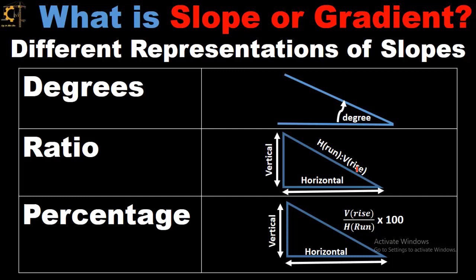What is slope or gradient and what are different representations of a slope. In this video, we are going to discuss different expressions of a slope. As you can see over here, slope can be expressed in degrees, in ratio, or in the form of percentage.